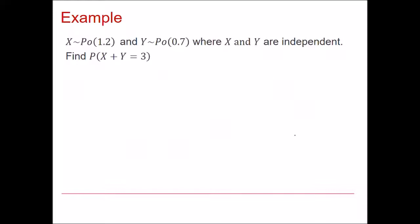Here is an example of how this works. So if I want to find the probability of x plus y equal to 3, given that x comes from a Poisson distribution with a mean of 1.2 and y has a Poisson distribution of 0.7, then I can combine this into a single distribution where, because they're independent and both Poisson to begin with, it must be Poisson distributed.